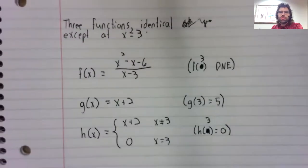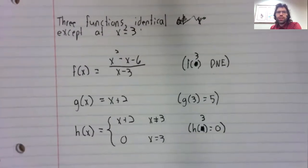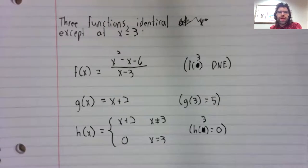Let's try to drive that home by looking at some related examples. Here are three functions: f, g, and h. And these functions are almost identical to each other. In fact, they are identical to each other, except at a single number.